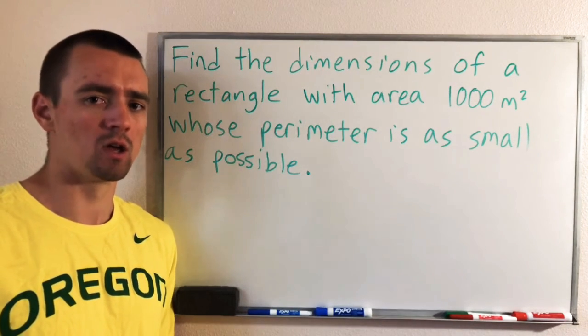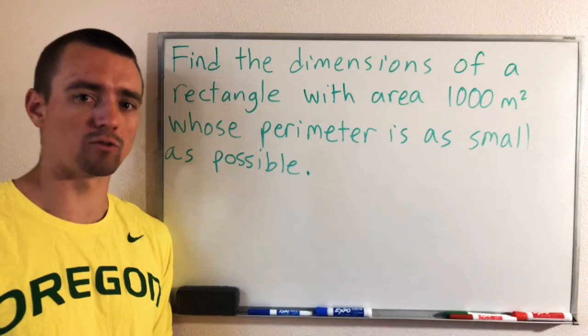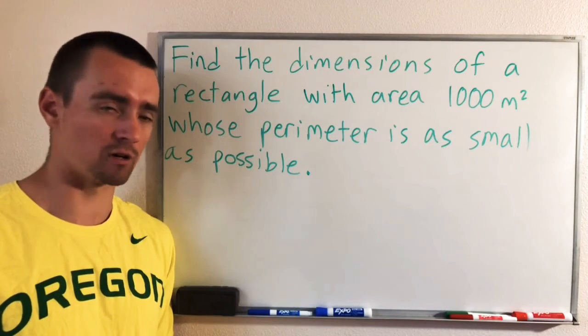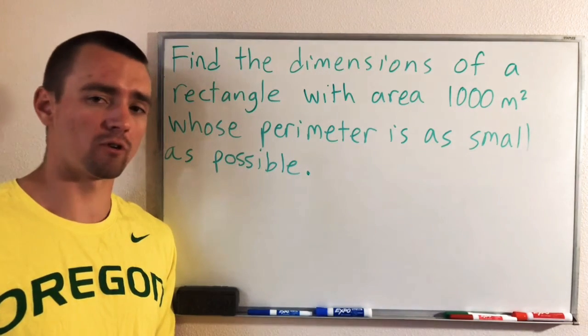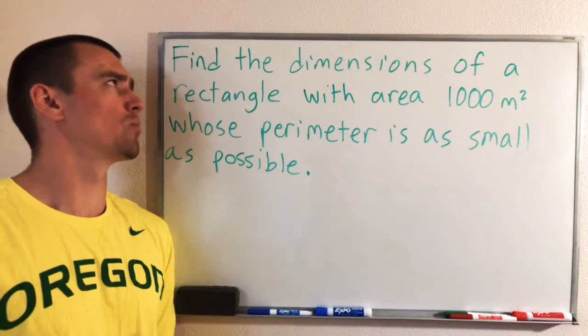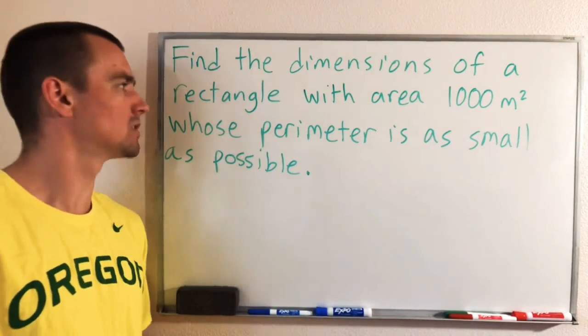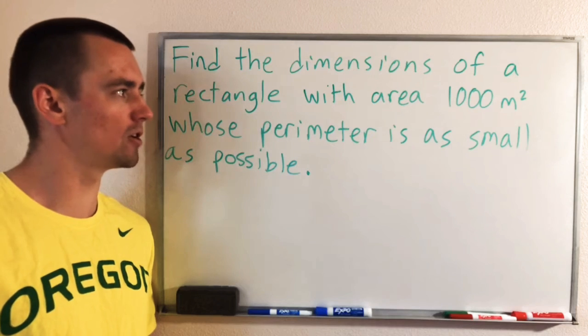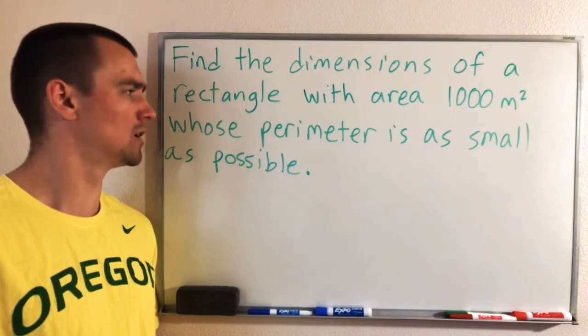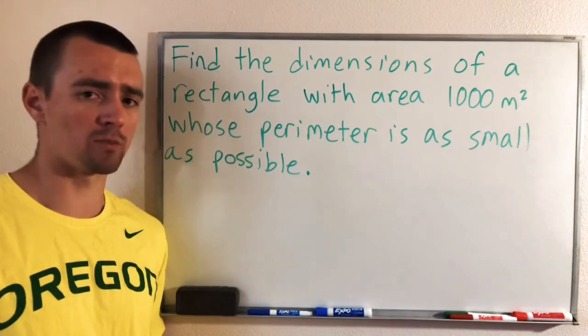But I actually get a lot of problems that I do, or some problems that I do from that book on my channel. So without further ado, let's jump into it. The problem we're going to be dealing with today is find the dimensions of a rectangle with area 1,000 meters squared, whose perimeter is as small as possible.